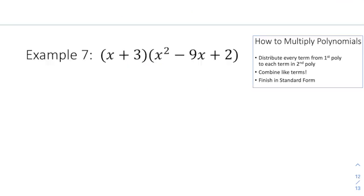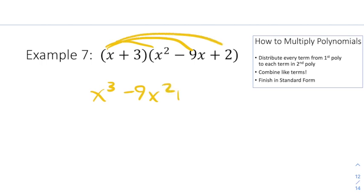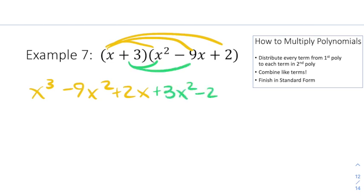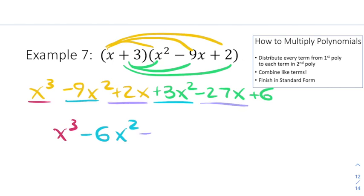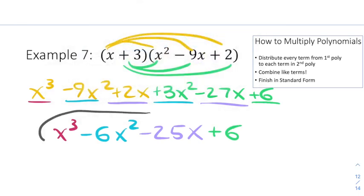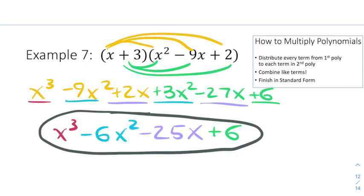Example 7 looks a little different, but the concept is the same. I take everything from the first polynomial — x goes to all three terms: x times x squared makes x cubed, x times negative 9x makes negative 9x squared, and x times 2 makes 2x. Then the same with 3: 3 times x squared makes plus 3x squared, 3 times negative 9x makes negative 27x, and 3 times 2 makes positive 6. Combining like terms: x cubed comes down, negative 9x squared and 3x squared give negative 6x squared, 2x and negative 27x give negative 25x, and 6 stays. The final answer is in standard form.